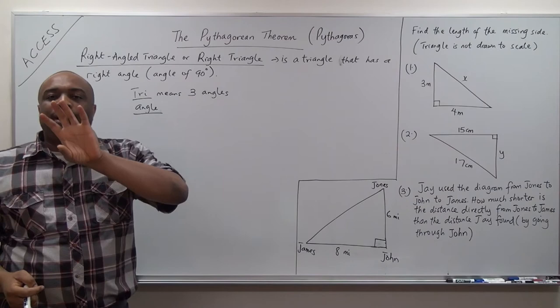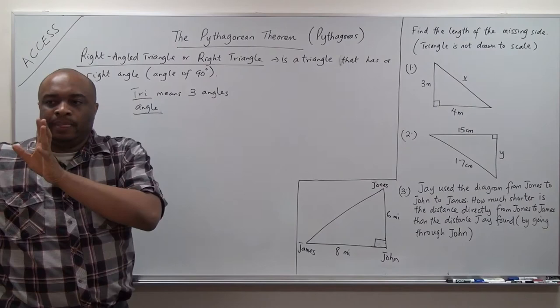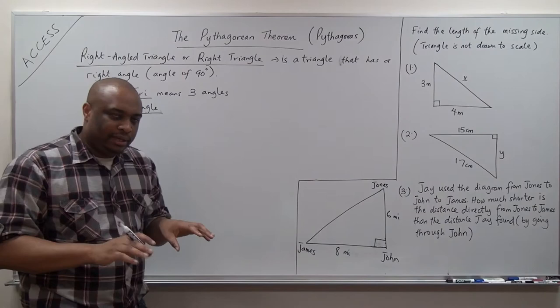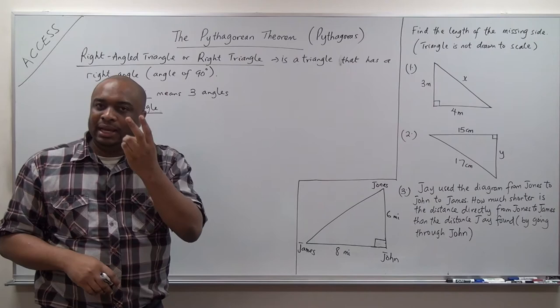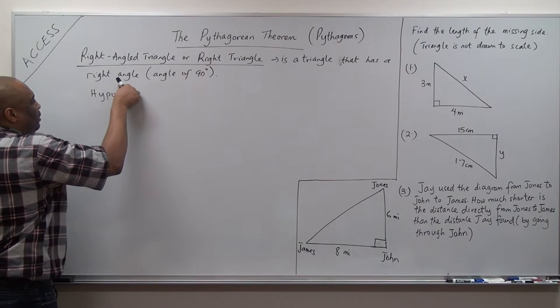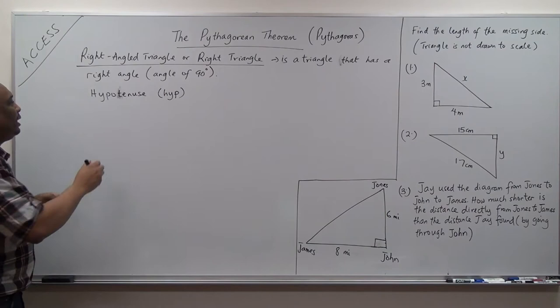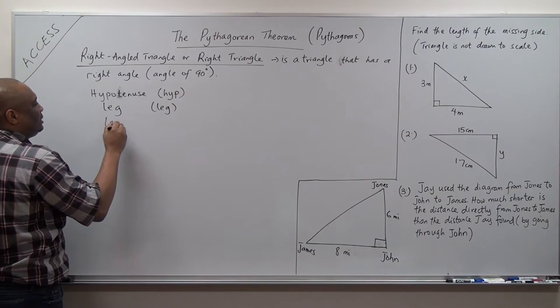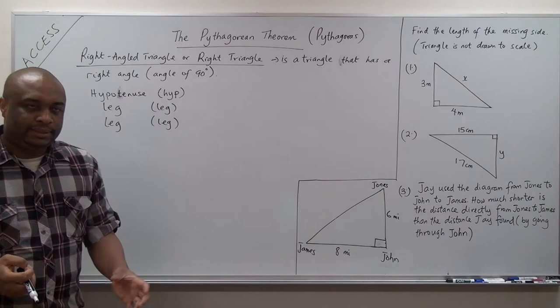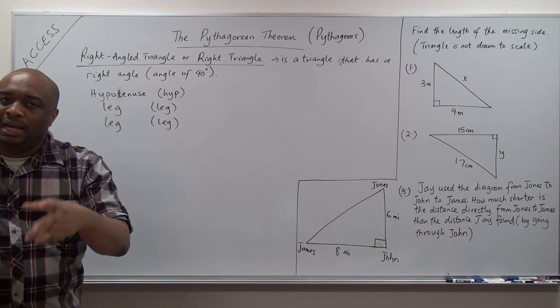In a right triangle only — not an acute triangle or obtuse triangle — we identify the sides as either hypotenuse, leg, or leg. We have what we call the hypotenuse, and the other two sides are called the legs. So we have one hypotenuse and two legs. When we have a right triangle, one side is the hypotenuse and the other two sides are the legs.